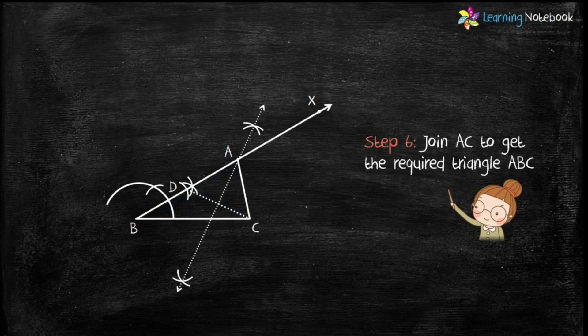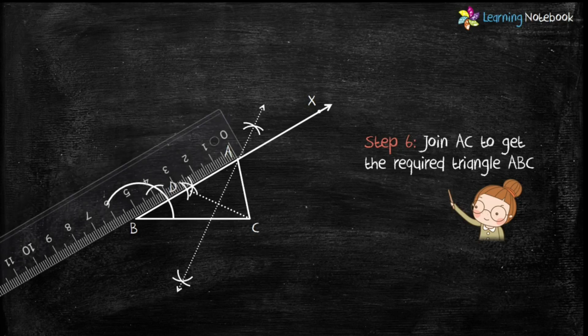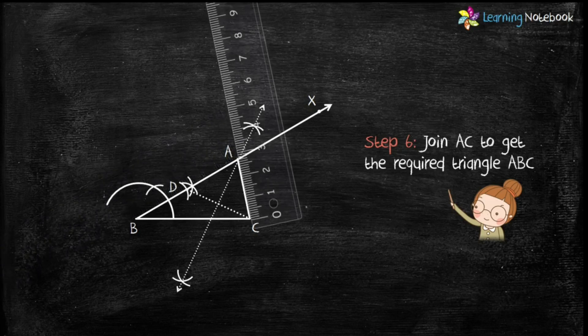Students, you must measure the lengths of AB and AC — the difference of their lengths should equal 2.5 centimeters for the construction to be correct. AB equals 5.2 centimeters and AC equals 2.7 centimeters, so AB minus AC equals 2.5 centimeters. Therefore, this construction is correct.